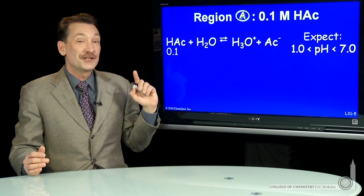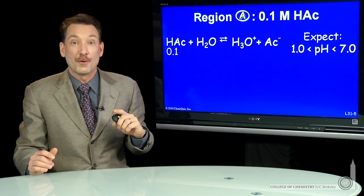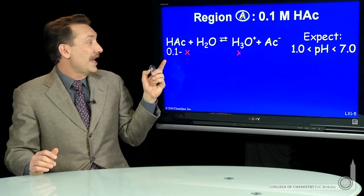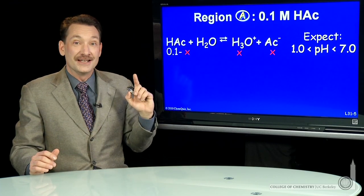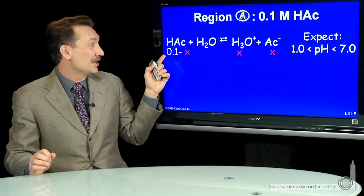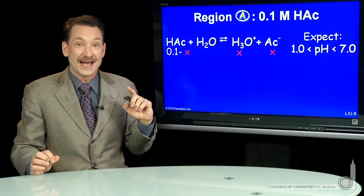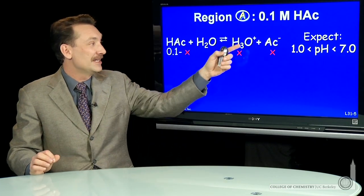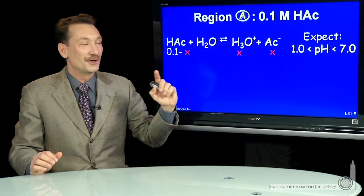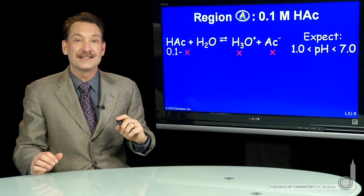Let's say our original concentration of the acid is 0.1 molar. And a little of it dissociates to give me an equilibrium concentration of 0.1 molar minus x of the HAc, x molar H3O plus, and x molar Ac minus.